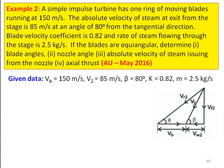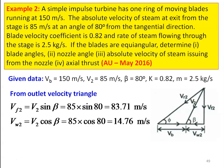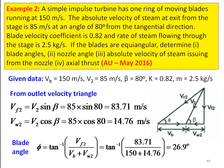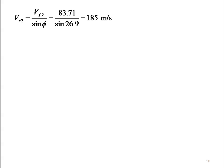Given data: Vb = 150 m/s, V2 = 85 m/s, beta = 80 degrees, K = 0.82, mass flow rate = 2.5 kg/s. From the outlet velocity triangle: Vf2 = V2 sin beta = 85 × sin 80 = 83.71 m/s; Vw2 = V2 cos beta = 85 × cos 80 = 14.76 m/s. Blade angle phi = tan inverse of (Vf2 / (Vb + Vw2)) = tan inverse of (83.71 / (150 + 14.76)) = 26.9 degrees. Vr2 = Vf2 / sin phi = 83.71 / sin 26.9 = 185 m/s.